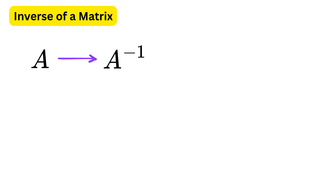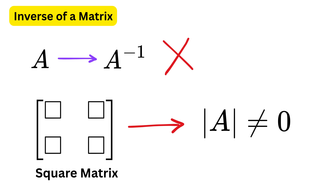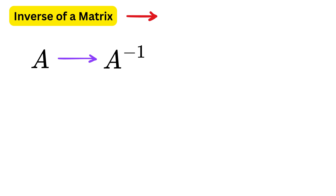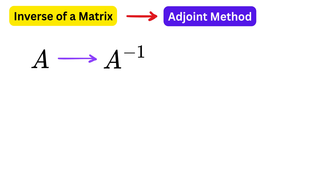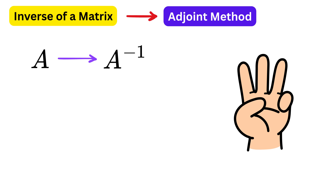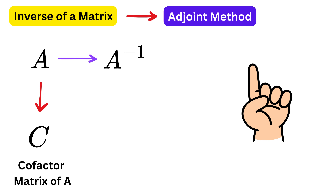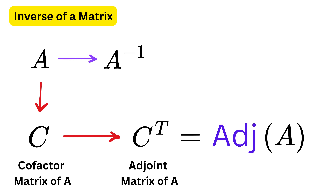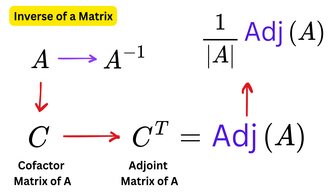Not all matrices have an inverse. Only square matrices which have a non-zero determinant can have an inverse. If the determinant is zero, the matrix is called a singular matrix and it cannot be inverted. There are multiple ways to find the inverse of a matrix, but at this level we will focus on the most traditional and theoretical approach: the adjoint method. The adjoint method uses three main steps: first, find the cofactor matrix; then take the transpose of that cofactor matrix to get the adjoint; finally, divide the adjoint by the determinant of the original matrix.